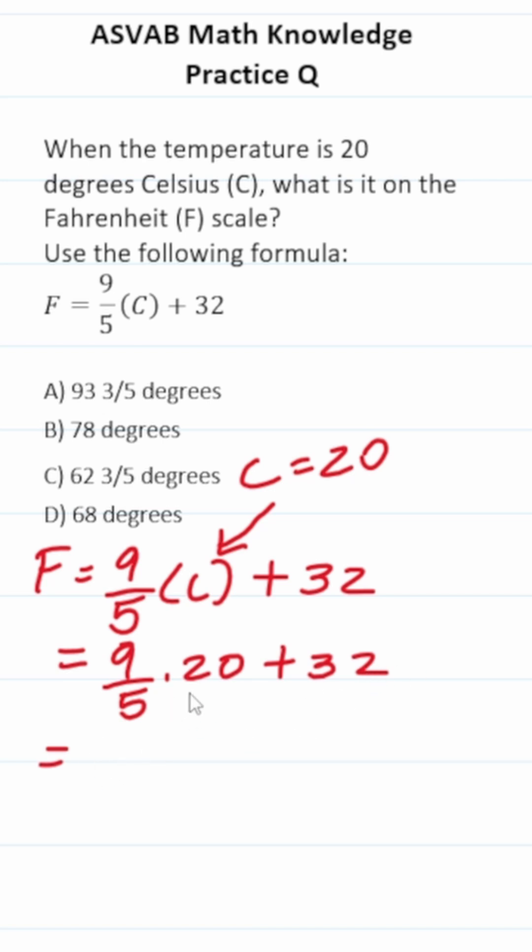To make this math a little bit easier, I'm going to place 20 over 1, which is going to enable me to cross-reduce by saying 5 goes into 5 one time, 5 goes into 20 4 times. 9 over 1 is just 9 times 4 over 1. That's just 4 plus 32. 9 times 4 is 36, so this is 36 plus 32.